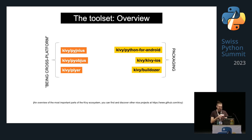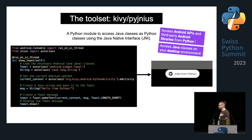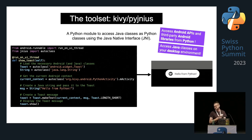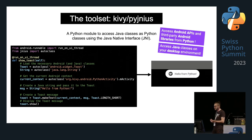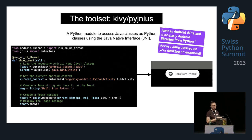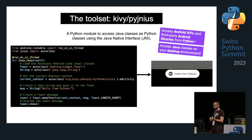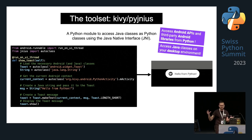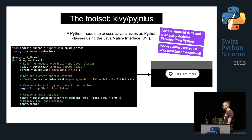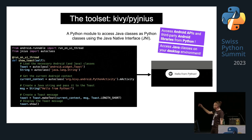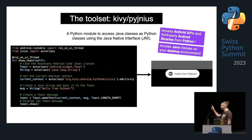PyJNIus is a Python module to access Java classes as Python classes using the Java Native Interface. You can access Android APIs and third-party Android libraries from Python, and you can also use PyJNIus with Kivy to access Java classes in your desktop environment. If you need to mix Java and Python, PyJNIus is the solution. The example shows using the Autoclass helper to import classes from Java and use them from Python.